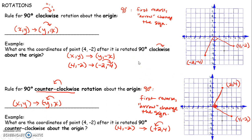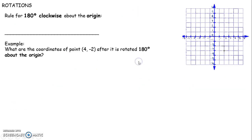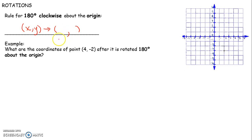Let's talk about rotating 180 degrees about the origin. For 180 degrees, x, y stays in the same order — you just change the sign of each. Change the sign of x and change the sign of y.